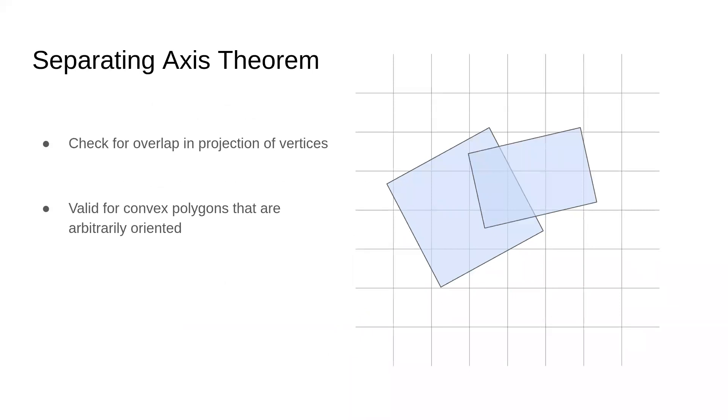A lot of work has been done in the game design community to develop efficient approaches for detecting overlap between shapes. One such method is a separating axis theorem.